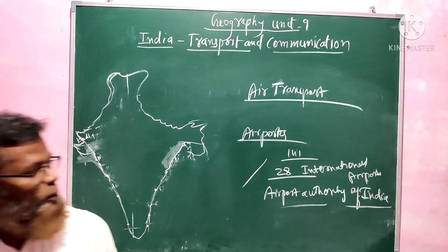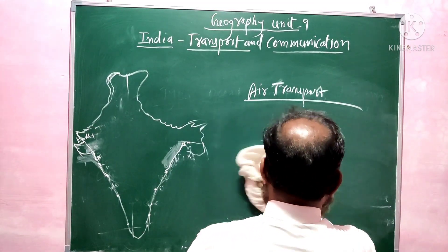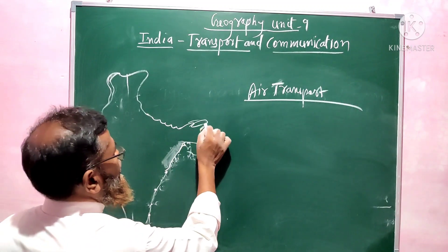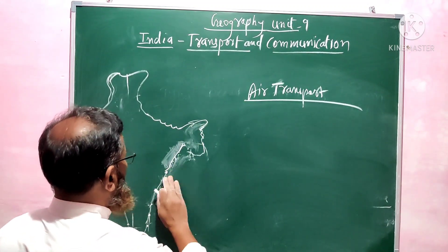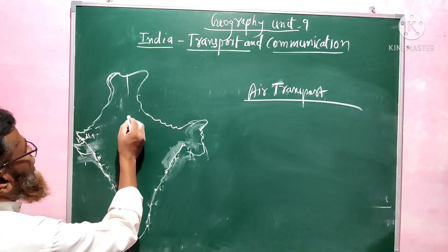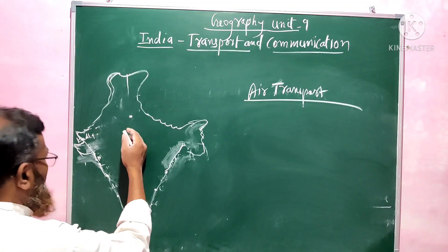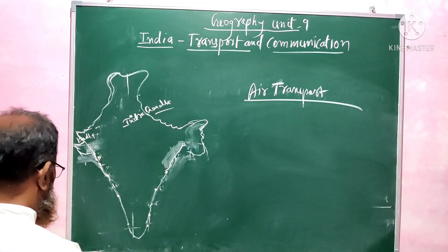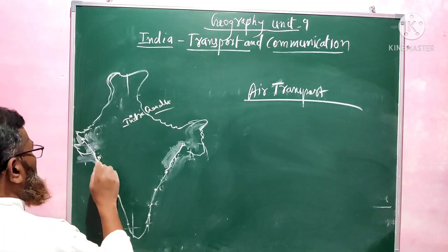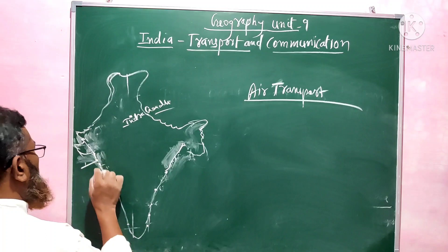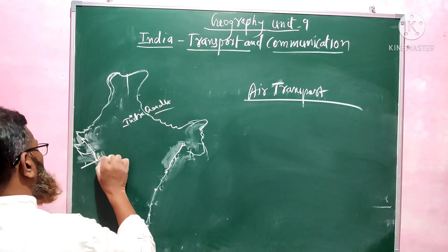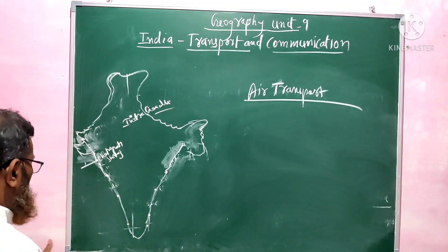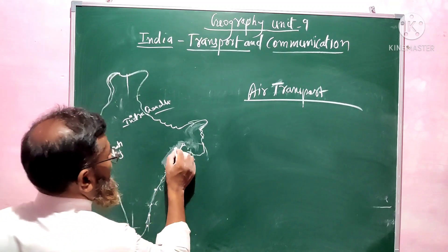Some of the major airports I'm going to mention here — in the map, questions will come to locate or mark the major airports of India. In Delhi, it is called the Indira Gandhi International Airport. In Mumbai, we have Chhatrapati Shivaji International Airport.